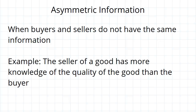An example of this would be if the seller of a good has a much better understanding of the quality of the good than the buyer does. We'll explore that example in more detail in the next video. What we are going to look at here is how one side having more information than the other allows for certain types of exploitation.